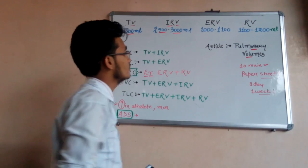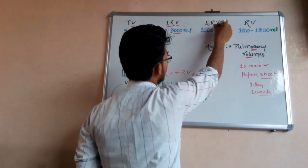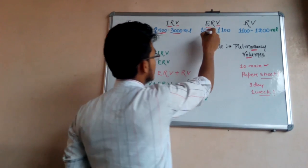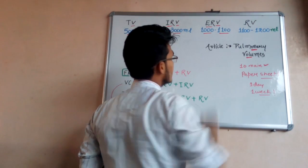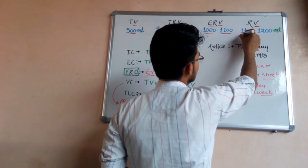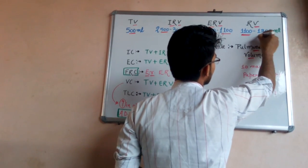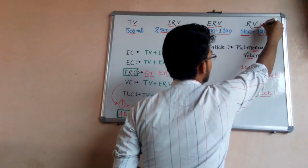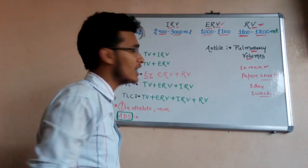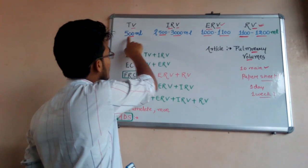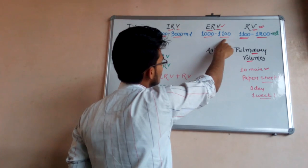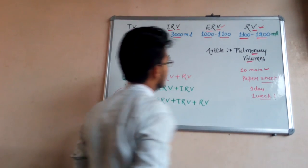After IRV, we have ERV — expiratory reserve volume — which is the forcefully expired air, that is 1000 to 1100 ml. The fourth one is RV — residual volume — which is 1100 to 1200 ml. This is the volume of air that remains in the lungs even after a forceful expiration. So we have to memorize only four volumes: TV at 500 ml, IRV at 2.5 to 3 liters, ERV at 1000 to 1100 ml, and RV at 1100 to 1200 ml.